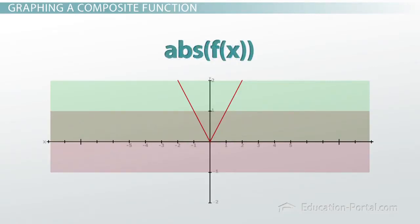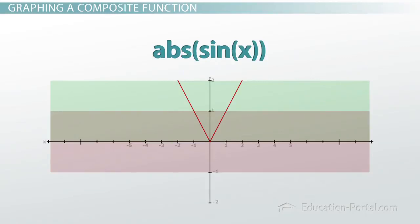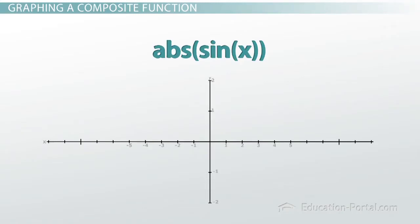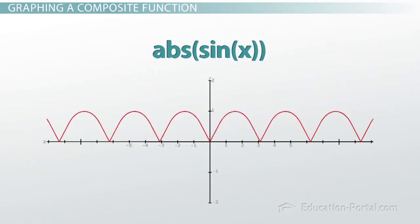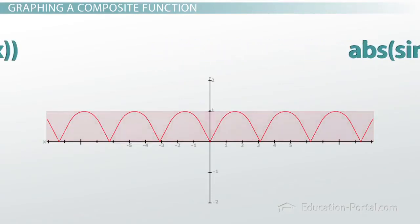For g of f of x, we use sine x as input to the absolute value function, giving us the absolute value of sine x. Graphing this composite function, the range goes from 0 to 1 and the domain covers all x. This makes sense given the component functions.